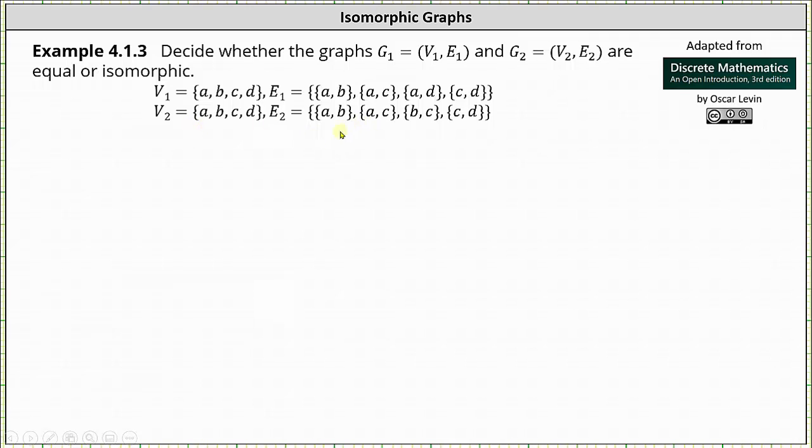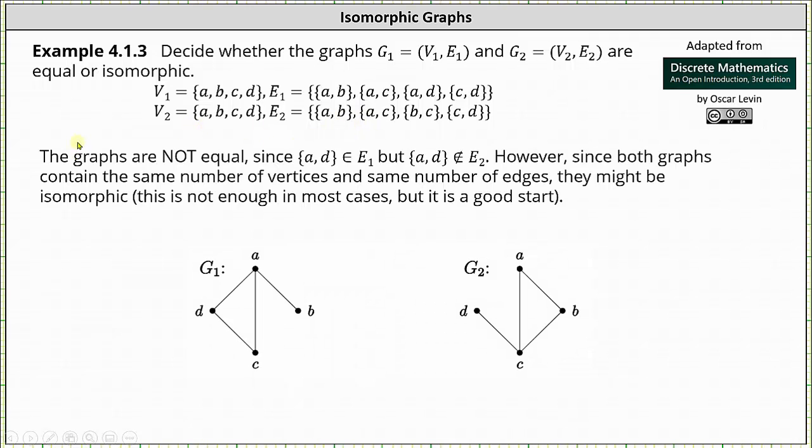Analyzing the edge sets, we can see the two graphs are not equal. The set with elements A and D is in E1 and it's not in E2. However, since both graphs contain the same number of vertices and the same number of edges, they might be isomorphic. This is not enough in most cases, but it's a good start. A better start would be to analyze the two graphs shown below.